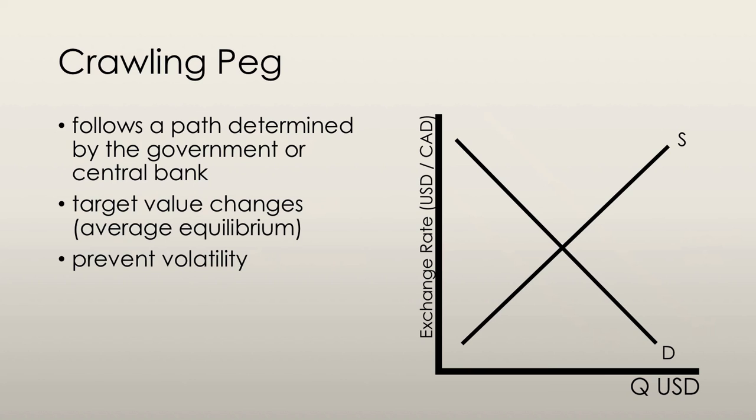A crawling peg is an exchange rate that follows a path determined by a decision of the government or the central bank. And again, it's achieved through central bank intervention. It works a lot like a fixed exchange rate, except that the target value changes.